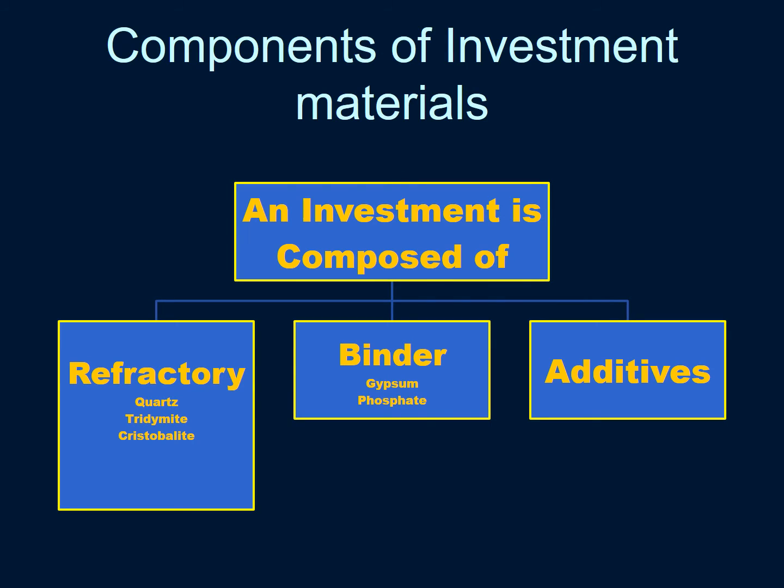Investment materials are mainly made up of three different components. The first is the refractory material, which could be any of the following: quartz, tridymite or cristobalite, which are allotropic forms of silica.